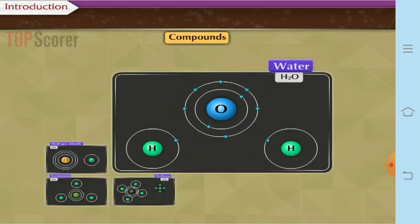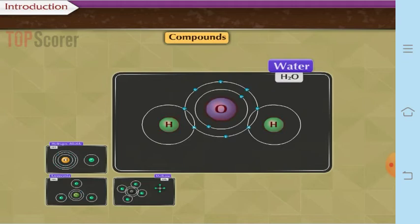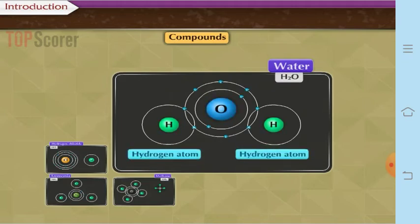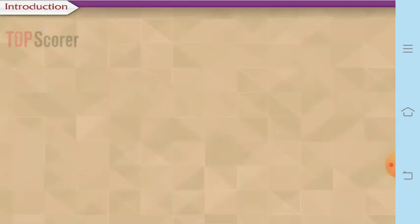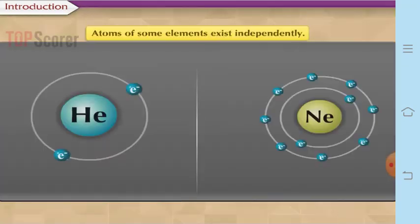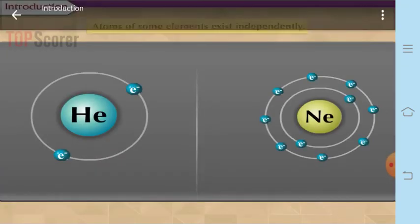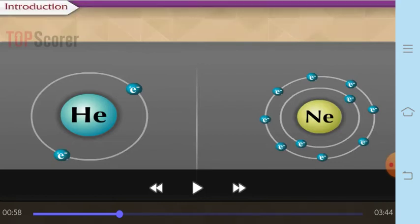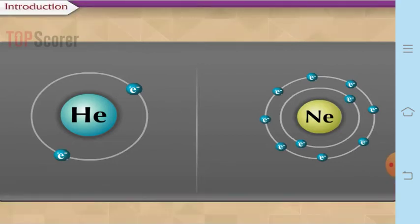You can see in the case of water: water is formed by combination of two atoms of hydrogen and one atom of oxygen. Now, atoms of some elements exist independently. Here you can see that helium and neon are shown. Helium and neon are elements, and they exist independently.